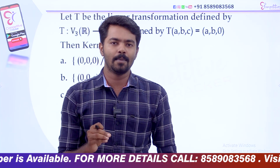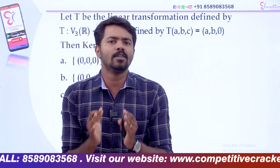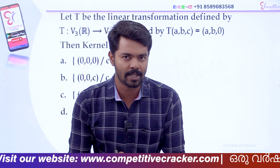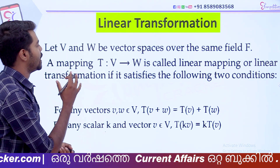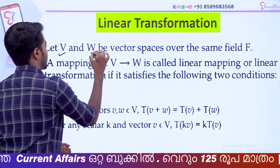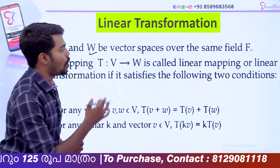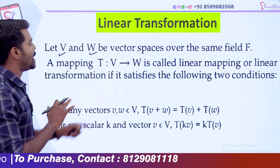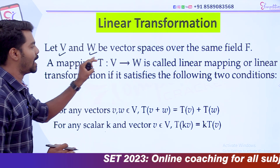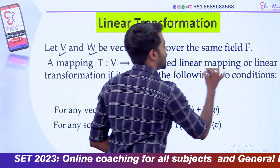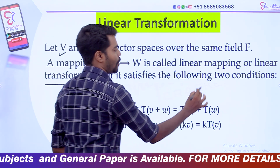So what we're going to discuss is linear transformation. What do we want to ask about linear transformation? Let V and W be two vector spaces. We define a mapping T as a linear transformation over the same field F, with the mapping T from V to W. What do we call a linear mapping or linear transformation? If it satisfies the following two conditions.